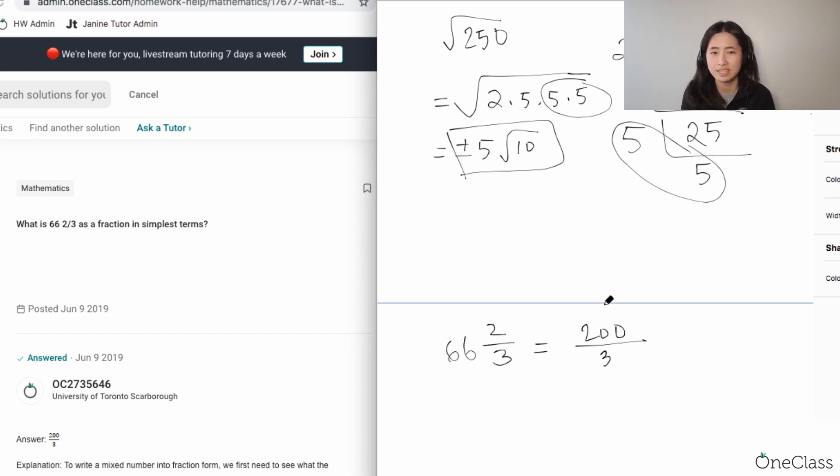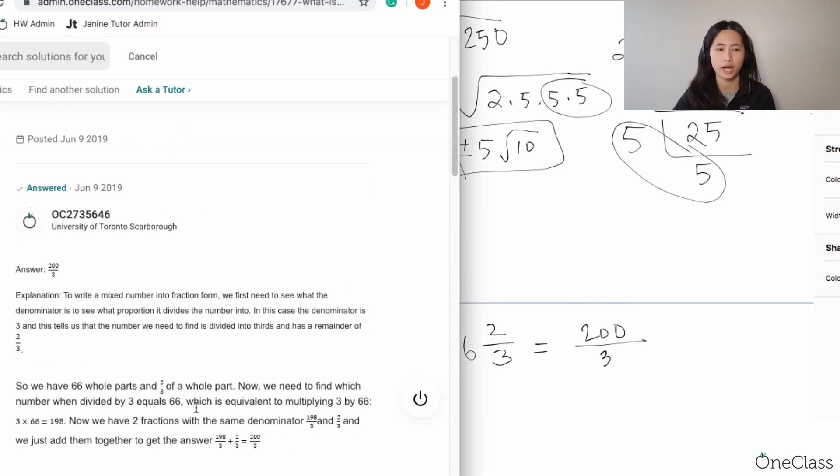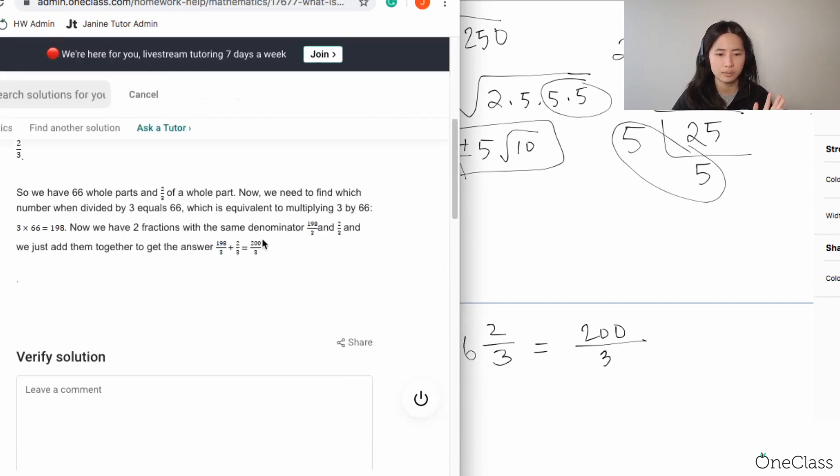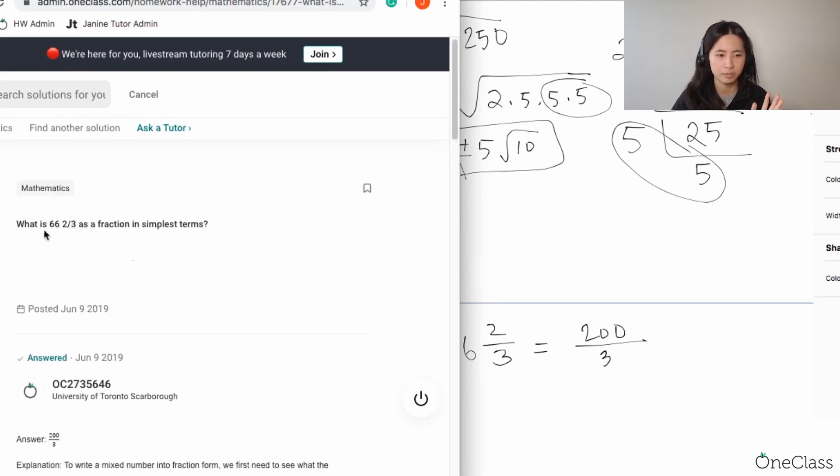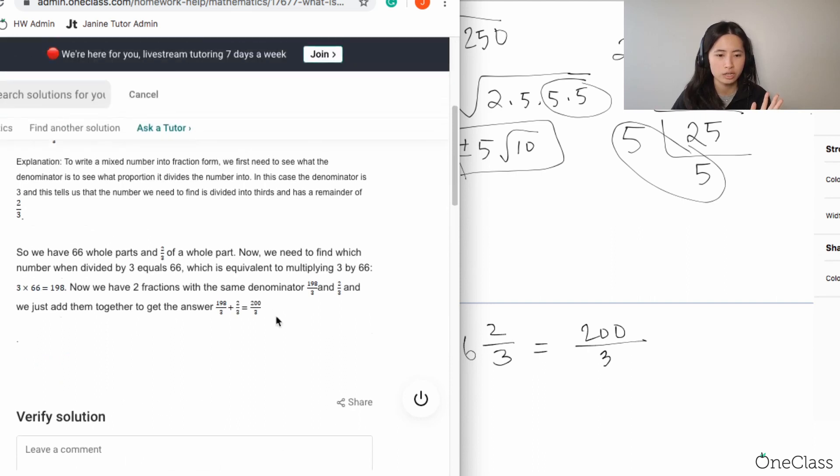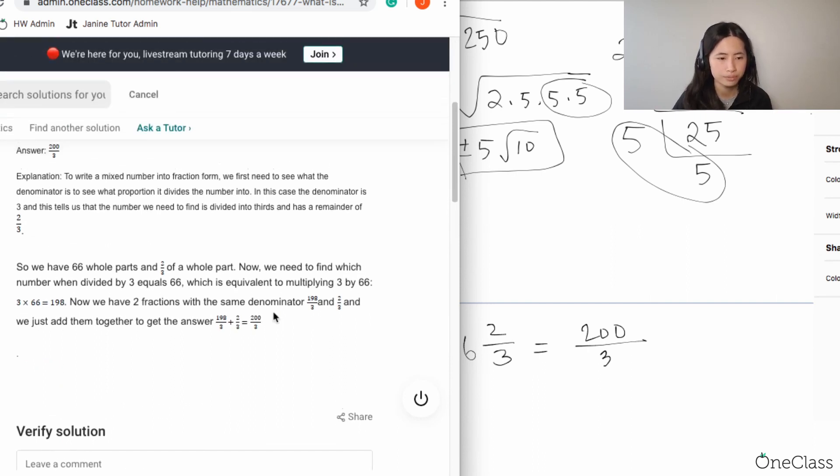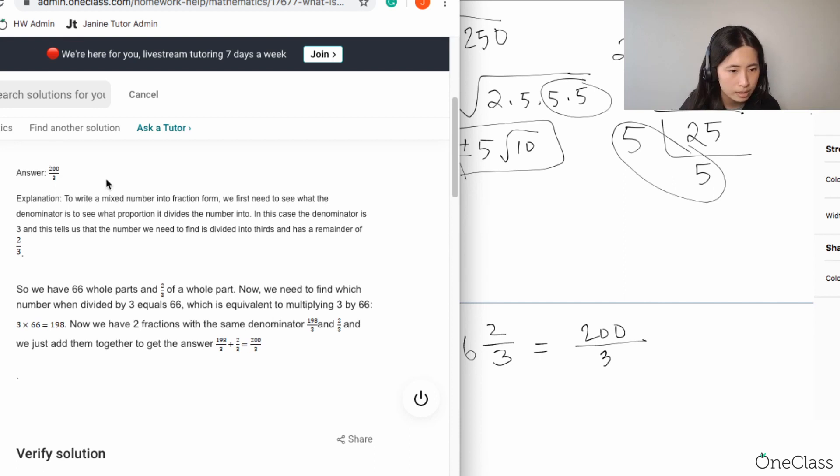As you can see, you cannot simplify 200 over 3. In other words, there's no other number that is divisible to both except one. Therefore, you cannot simplify 200 over 3 even further. In simplest terms, this is already simplified—200 over 3.